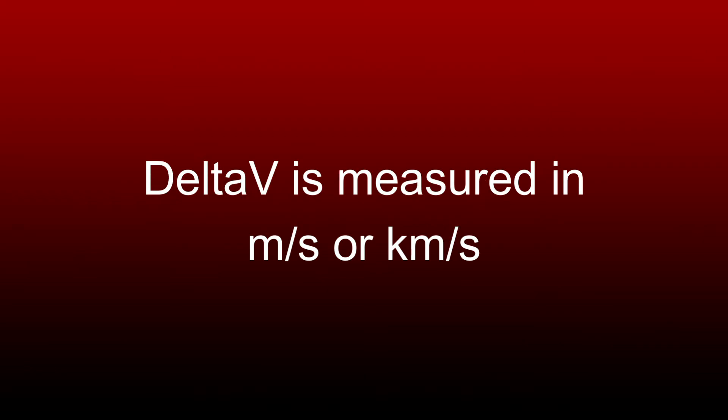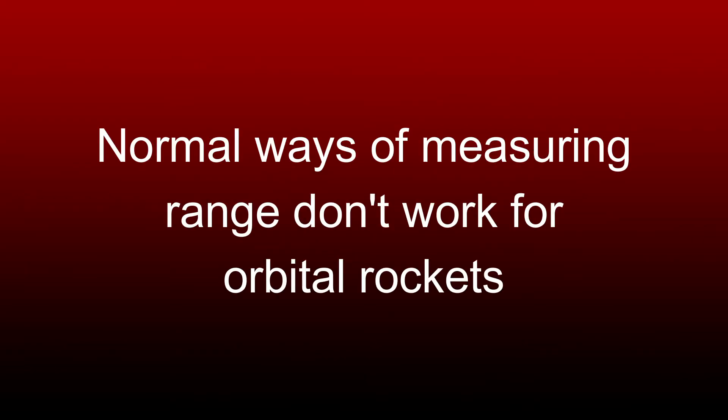Then we come across delta V. Delta V means change in velocity, and it can be used to measure how much a rocket can change its trajectory or its orbit. It is typically measured in meters per second. Delta V is a much more useful way of measuring the range of a rocket, since in space there is no force to slow down a rocket, so a rocket can orbit forever, making normal distance measurements an impractical way of measuring rocket range.